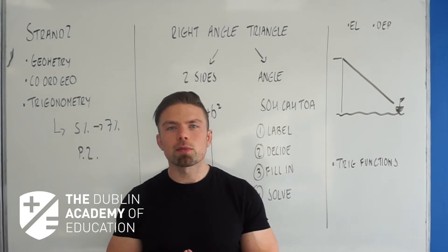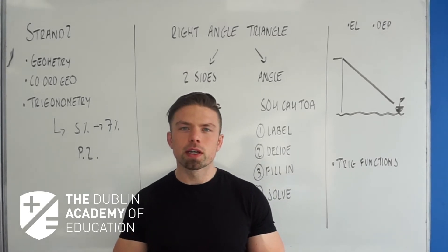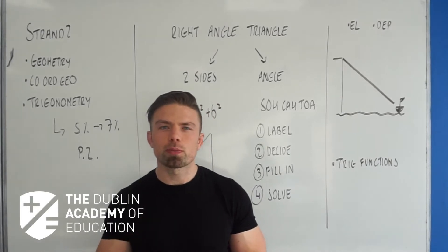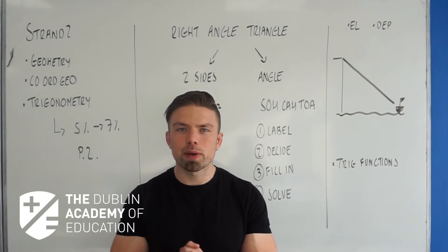How are you guys doing? David Lewis from the Dublin Academy of Education and today we're going to be looking at Junior Cert Strand 2, specifically Trigonometry which will be worth between five and seven percent of your Junior Cert. It'll appear on paper two.